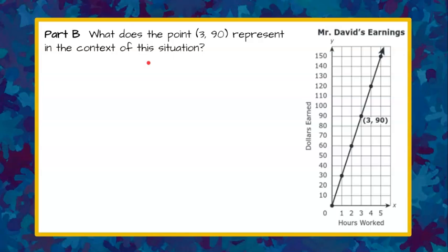Welcome back! We know that this is an ordered pair and an ordered pair represents x, y, so an x coordinate and a y coordinate. We're going to go to our graph to see what the x and y represent. In this graph of Mr. David's earnings, the x-axis represents the hours worked by Mr. David.